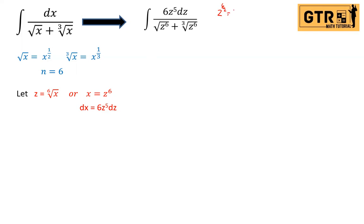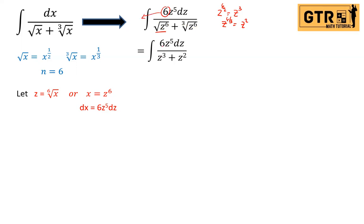Dividing six by two gives z cubed for the first term. For the second term, cube root of z to the sixth is z raised to six over three, which equals z squared. So the integral becomes six z to the fifth dz over z cubed plus z squared.